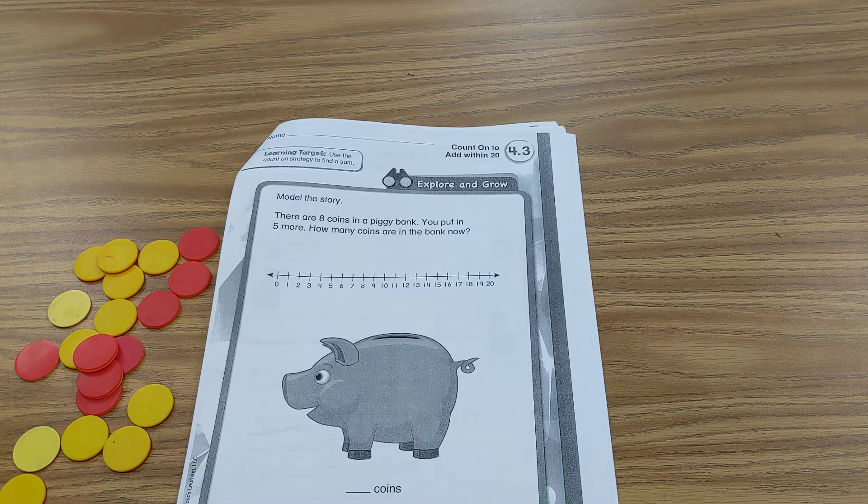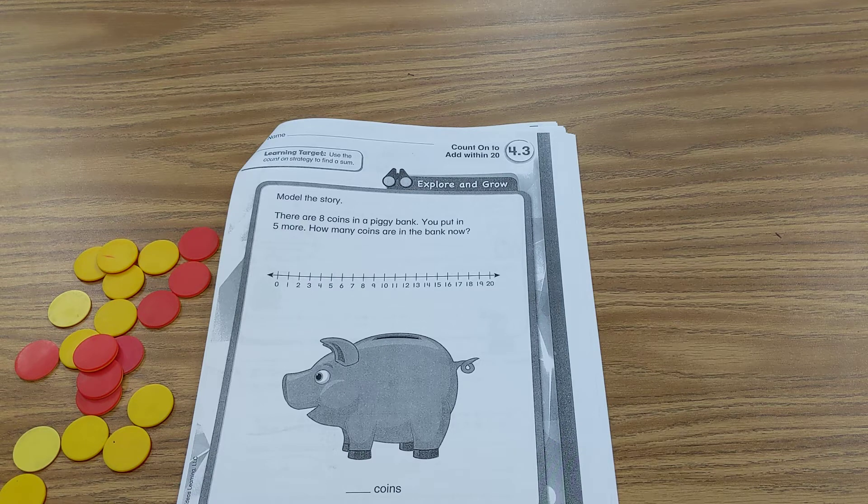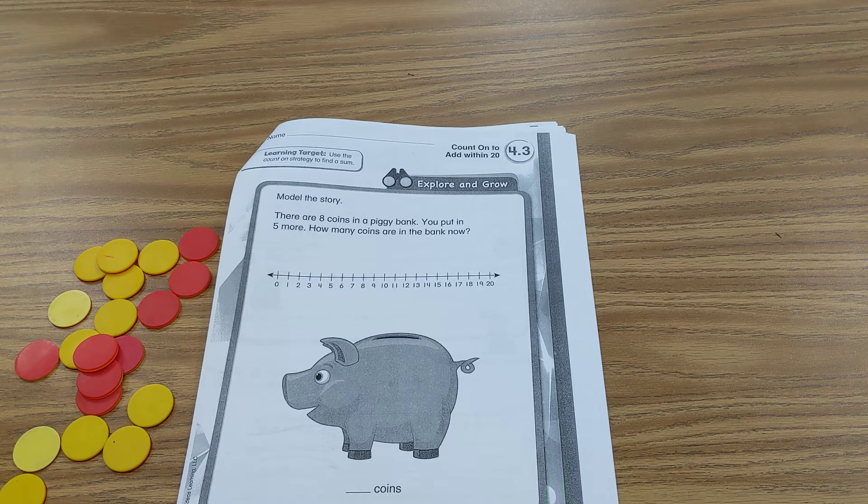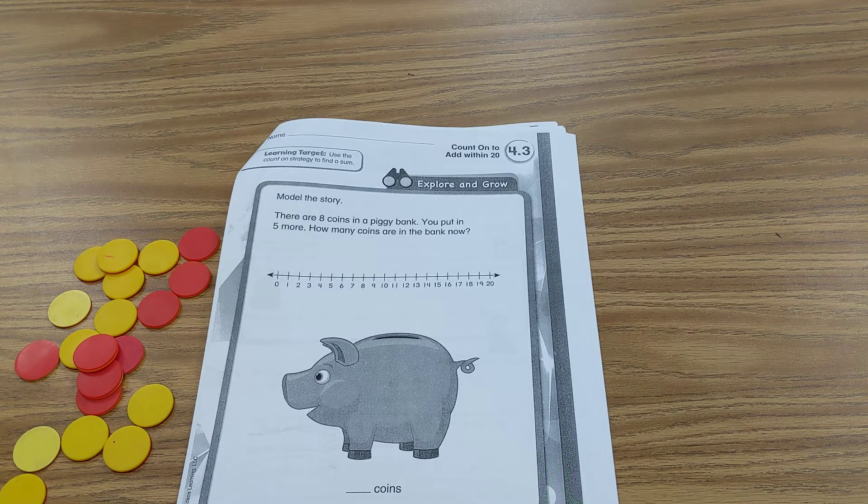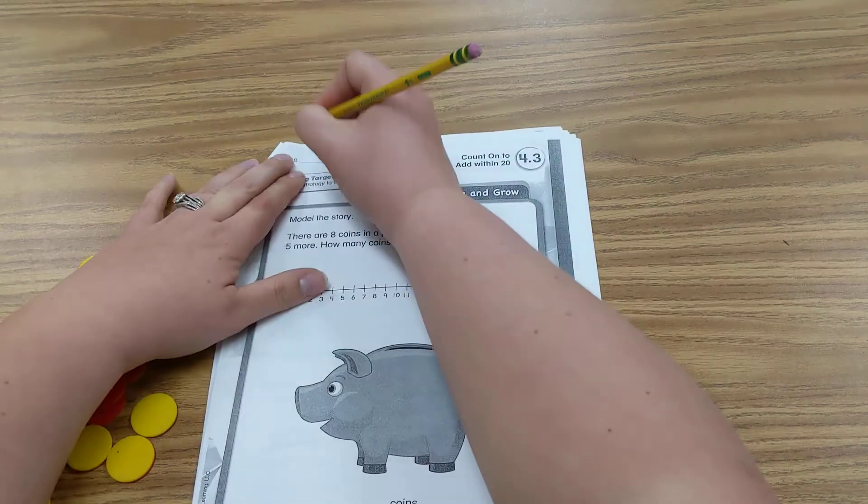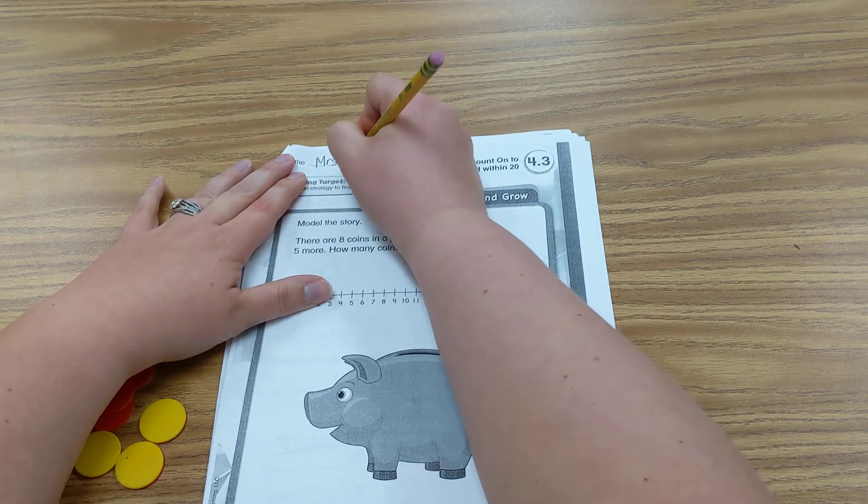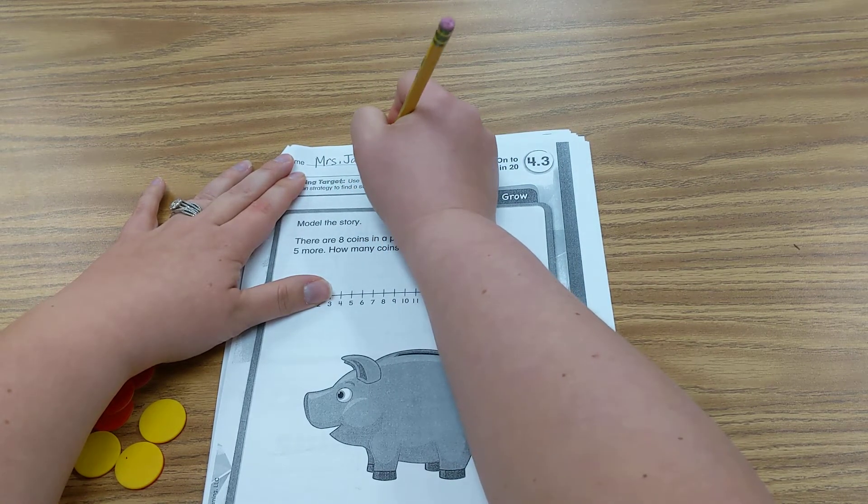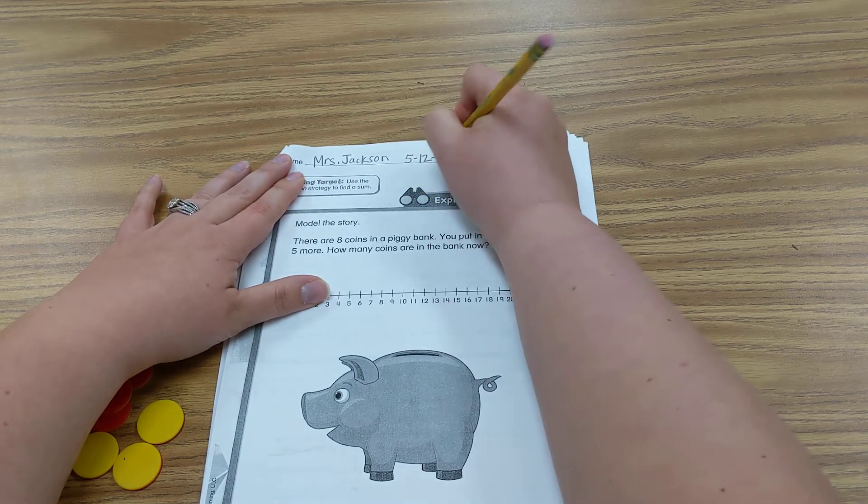And the first thing we need to do is write our name and date. So if your name is Itziel, you write Itziel. If your name is Abigail, you write Abigail. If your name is Hayden, you write Hayden. But my name is Mrs. Jackson, so I'm going to write Mrs. Jackson. And my date is 5-12-20.